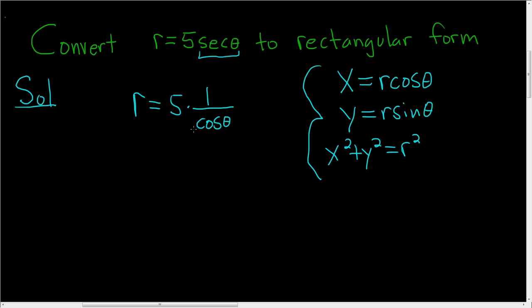We're not quite there yet because we have cosine, but we don't have an r here. So what we can do is multiply both sides by cosine.